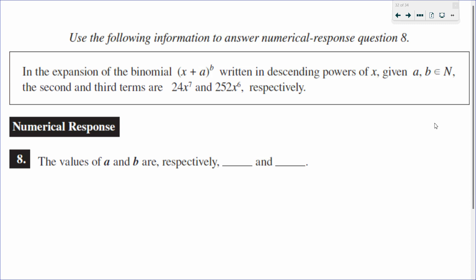In this question, we're given the expansion of a binomial, x plus a to the exponent of b. We're given the second and third terms, and we want to solve for a and b.